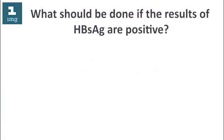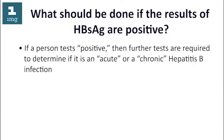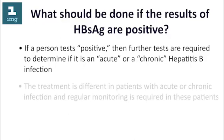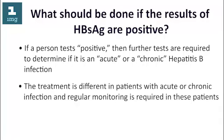What should be done if the results of HBsAg are positive? If a person tests positive, further tests are required to determine if it is an acute or a chronic hepatitis B infection. The treatment is different in patients with acute or chronic infection, and regular monitoring and treatment are required in these patients.